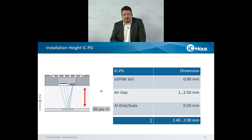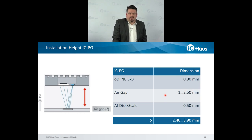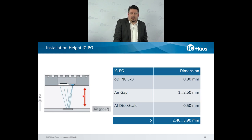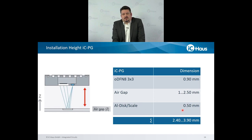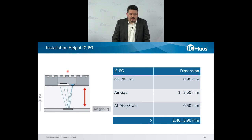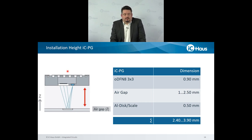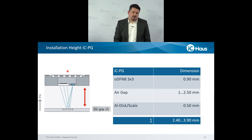Beside the X and Y dimensions, of course the installation height is an issue. Here is an example that the package used for our optical encoder IC is in the range of 0.9 millimeter. The air gap for ICPG can vary between 1 and 2.5 due to the push-button function, where you can get the voltage out of the distance of the sensor. For example, if you buy our evaluation kit, this comes with an aluminum disk which is 0.5. This will end up in a maximum installation height of less than 4 millimeter. Depending on your substrates — some customers use flex substrates or maybe ceramics — this can be definitely less than 5 millimeter total with a substrate.